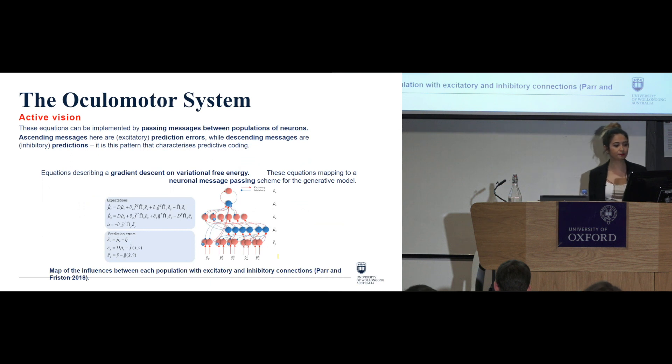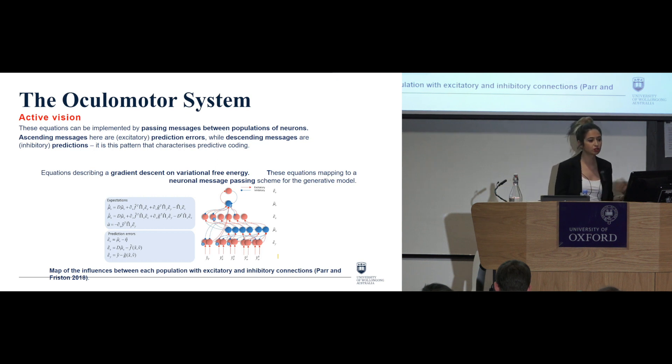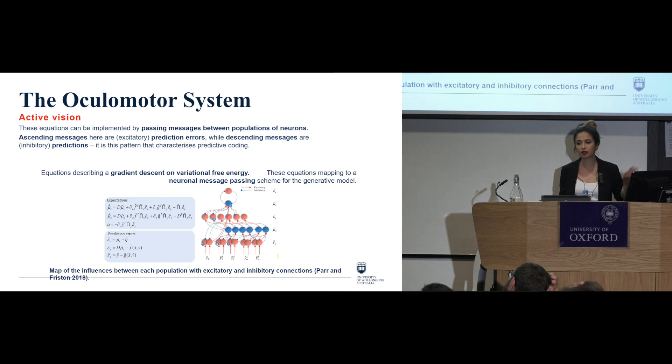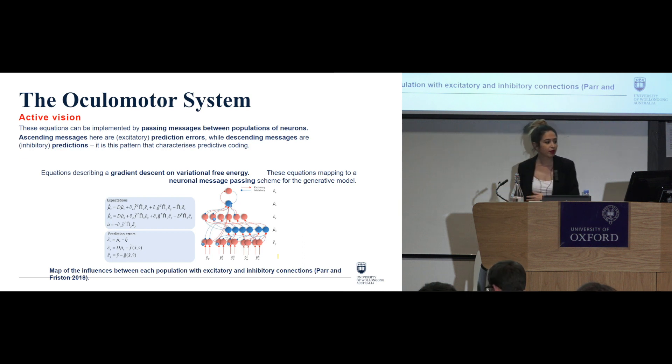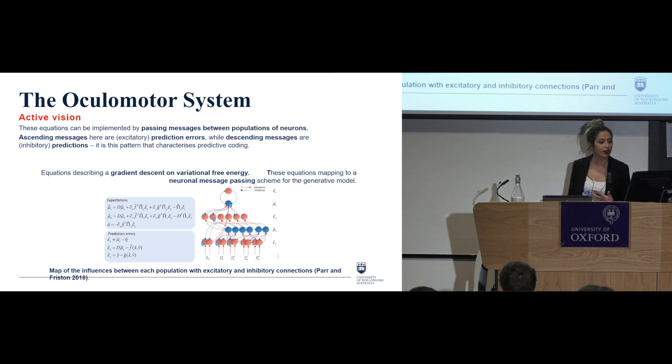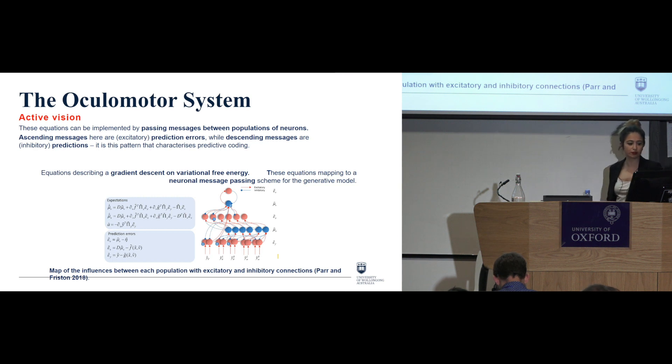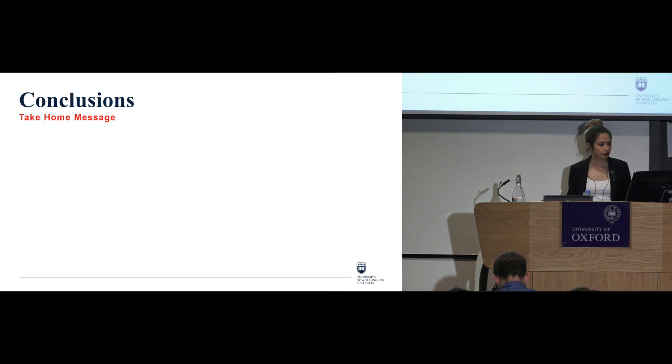Okay, so then how do we put all of this together? Well, these equations can be implemented by passing messages between populations of neurons, ascending messages here are excitatory prediction errors, while descending messages are the inhibitory predictions. And it is these patterns that characterizes what we know as a predictive coding. Now we see on the right hand, on the left hand side, we got equations that describe this kind of gradient descent on variational free energy neural message passing, and on the right side we have these equations mapping to the scheme of this generative model. So what happens is that we have a map of the influences between each population with excitatory and inhibitory connections.